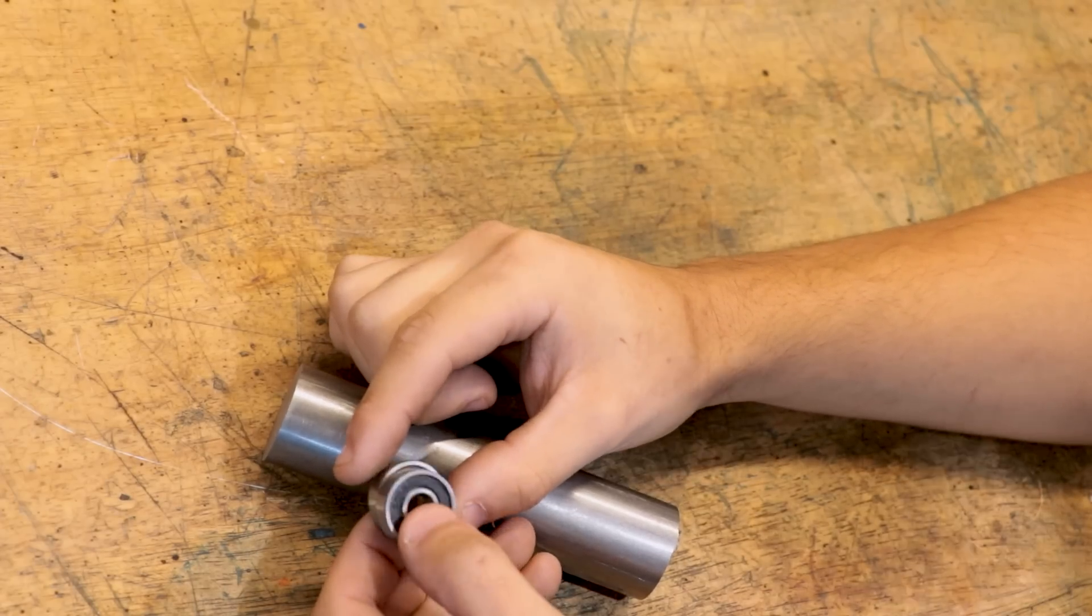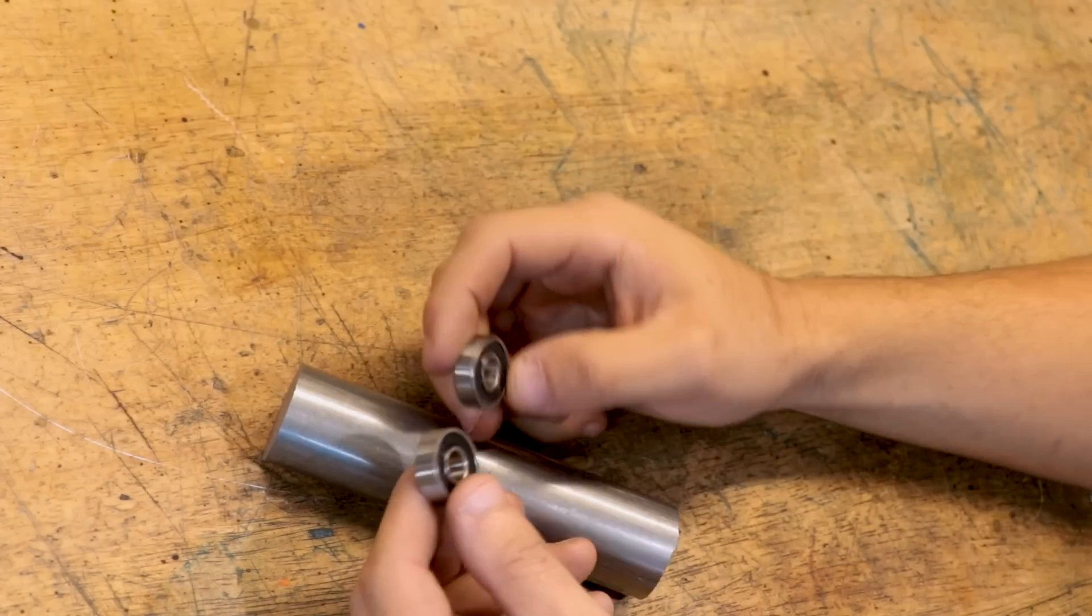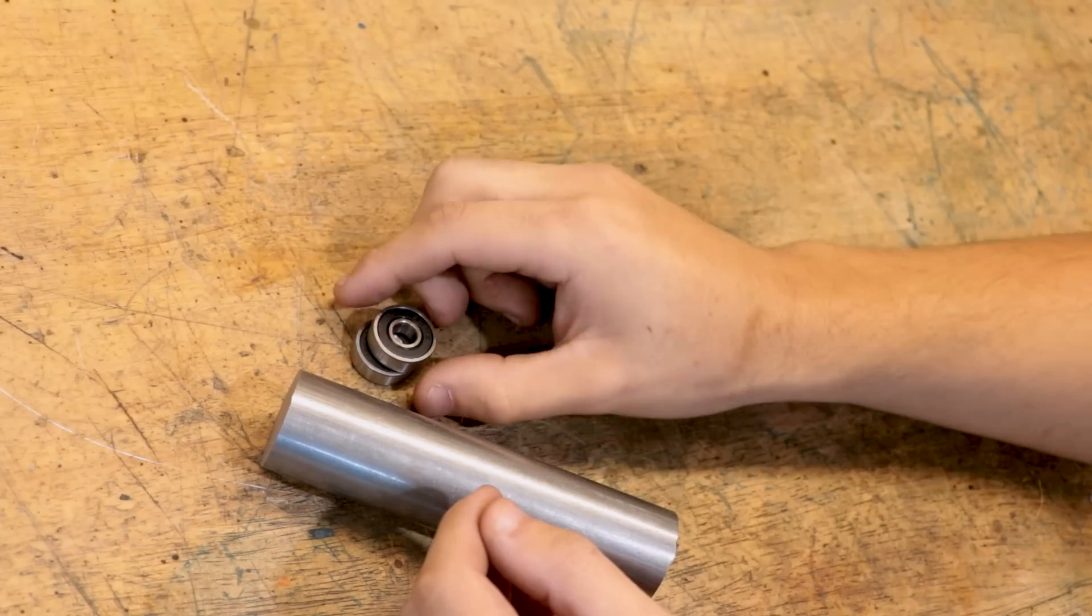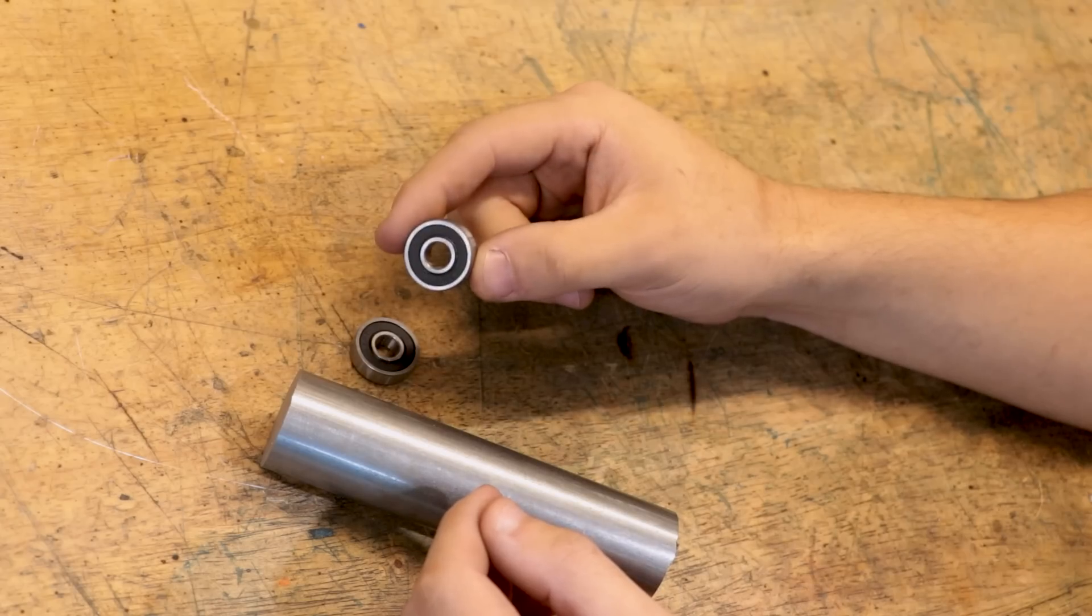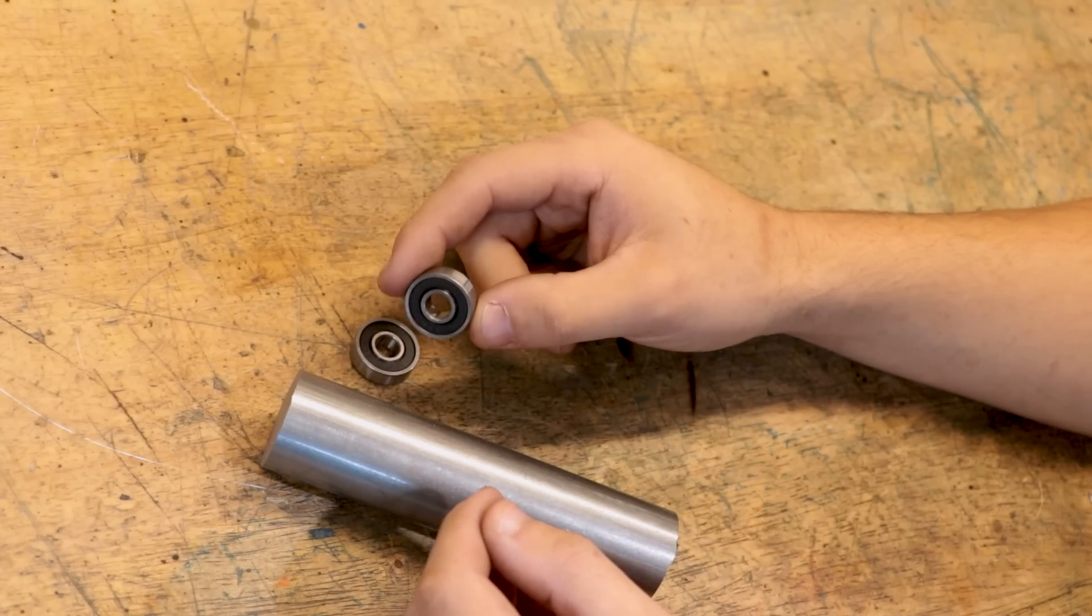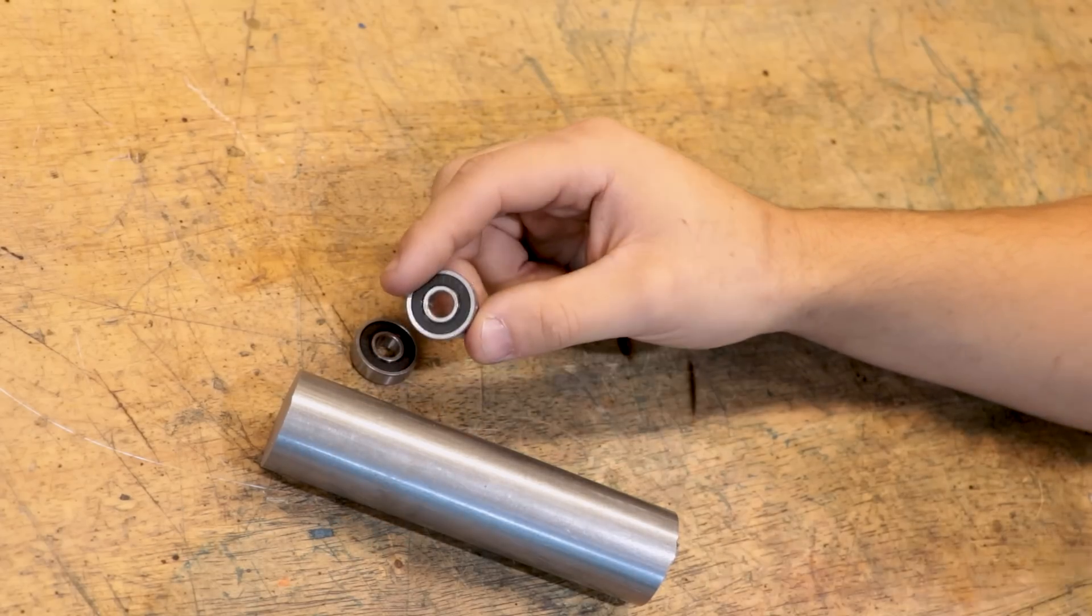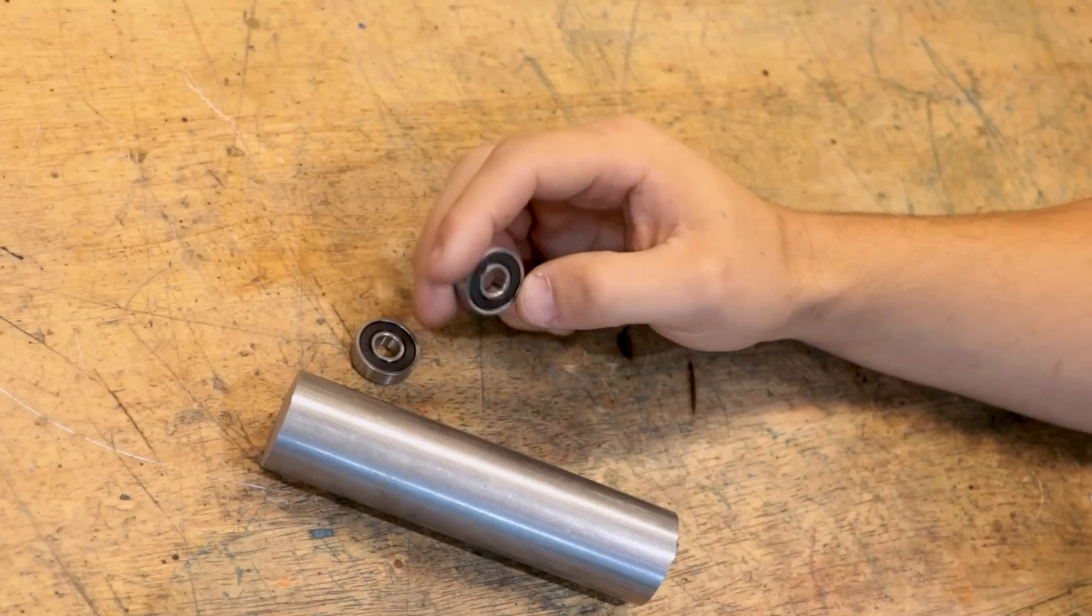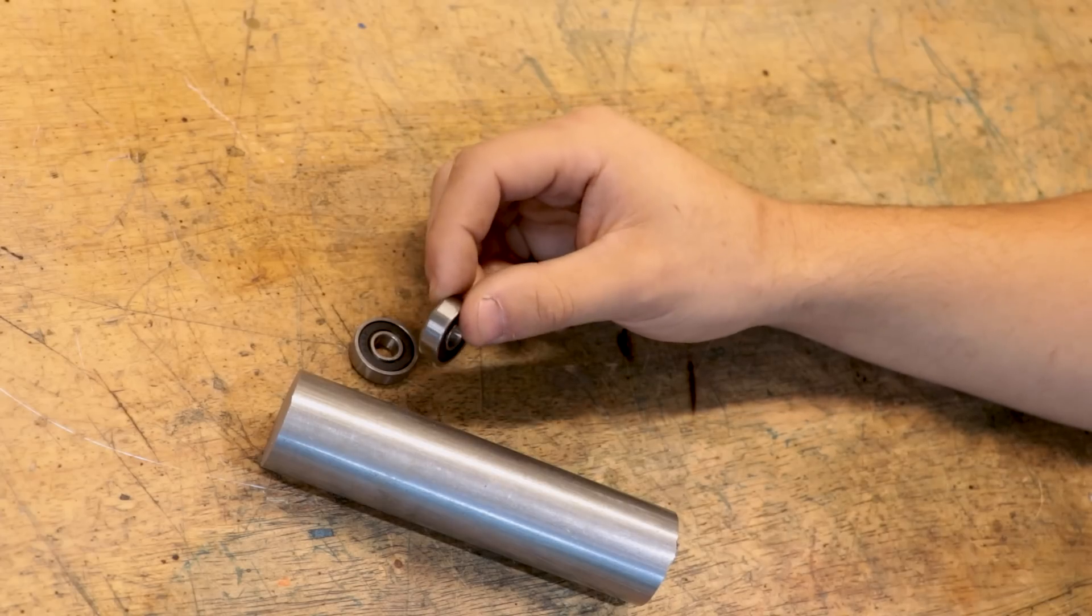Strictly speaking, these are not the type of bearings you'd want for a project like this. These are plain deep groove ball bearings, but what you'd really want is maybe a set of angular contact bearings and some thrust bearings. But I think the forces and the amount of usage should be low enough that I can get away with these types of bearings. If not, I can always replace them in the future. For now I'm using what I have on hand.